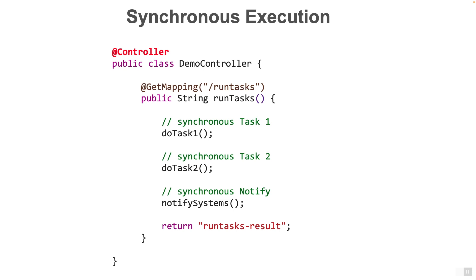Imagine we have a use case where several tasks need to be run by invoking a URL. In Spring Boot, we can quickly create an endpoint called slash runTasks, create a mapping and then return the result. Here all the activities related to the runTasks method are synchronous. DoTask1, DoTask2 and notifySystems are all executed on the same thread, a user handling thread for that particular request.